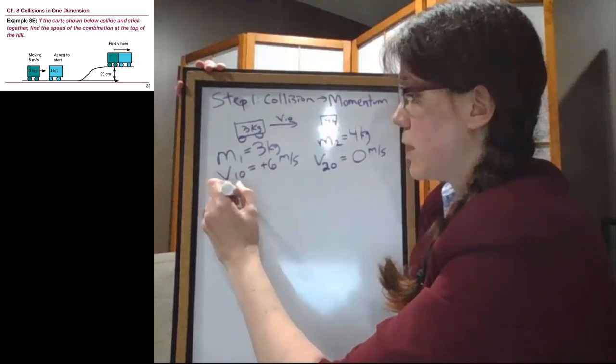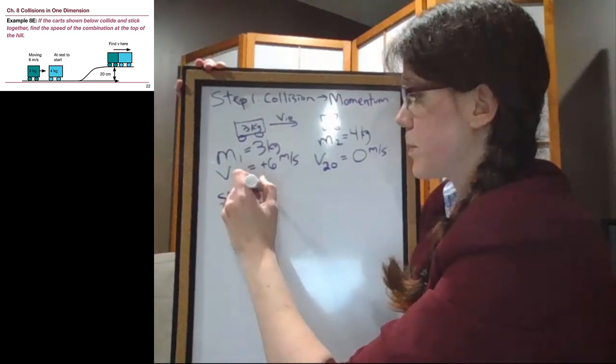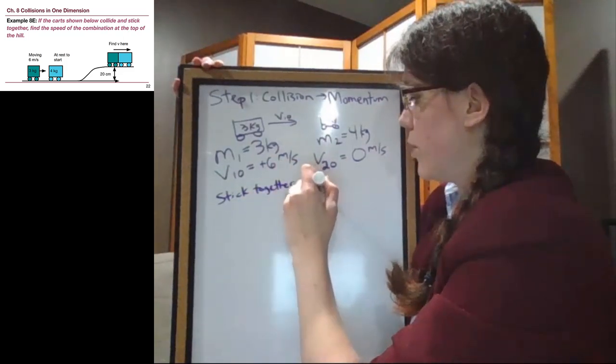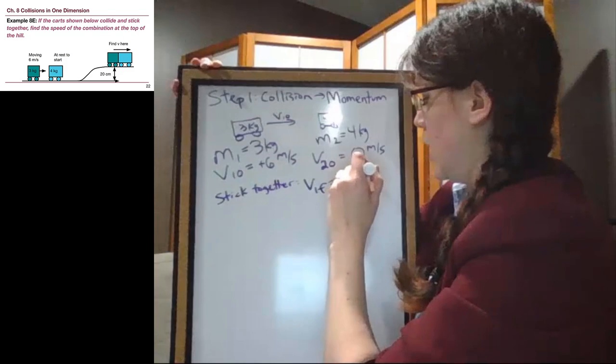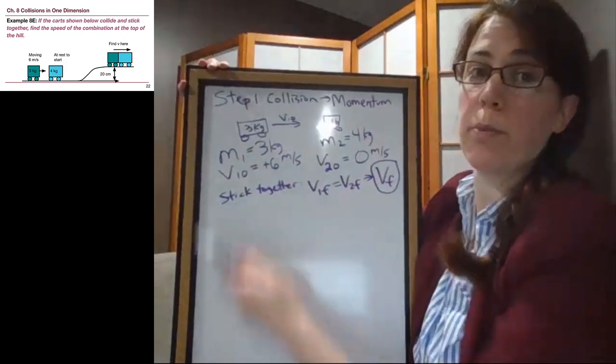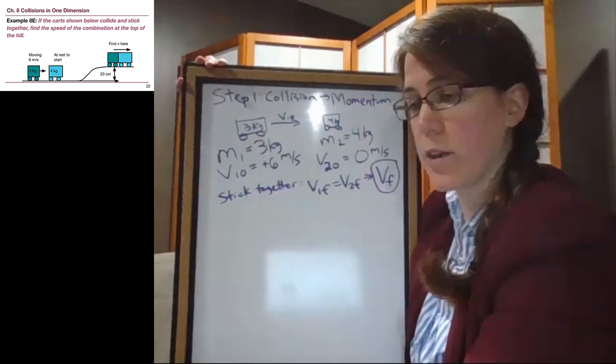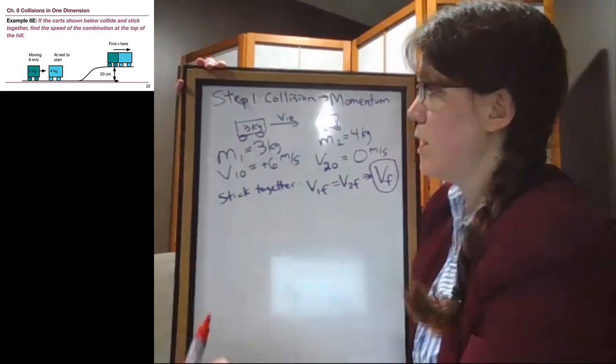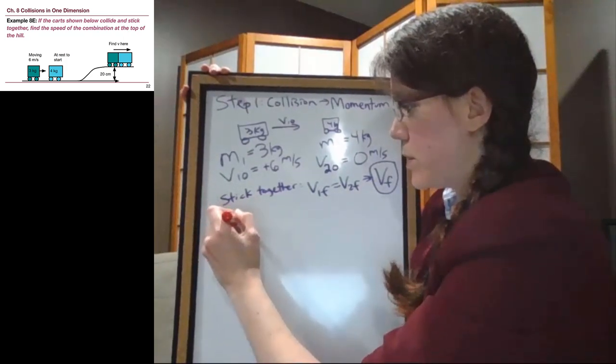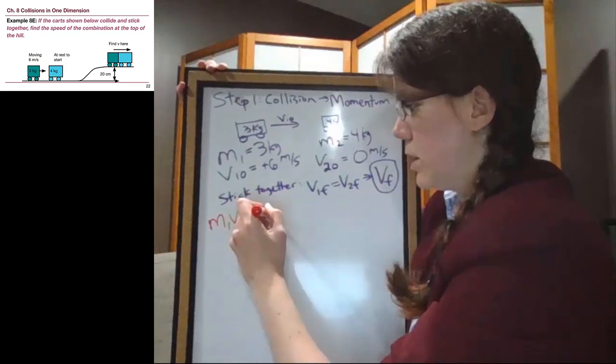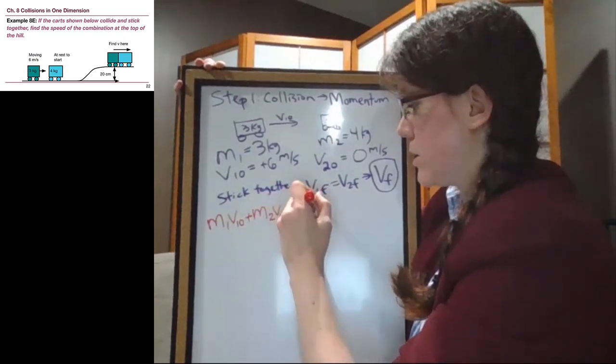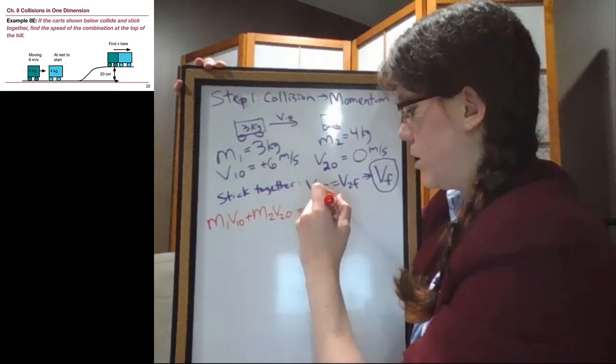And we're told that they stick together. So because they stick together, that means V1 final is equal to V2 final. And we will just call it V final that we don't know about. And again, this is the final part of step 1, not the end of the problem. To make it clearer that every time we're using this same equation, I'm going to write it out in red. So it is the momentum conservation equation, because that's used every single time that we have a collision.